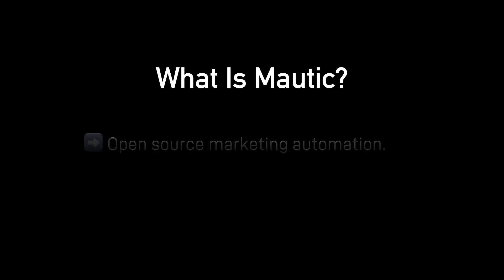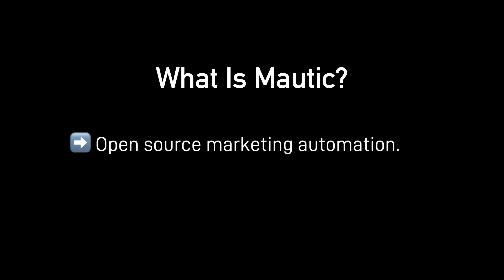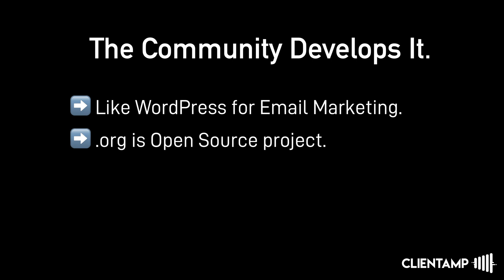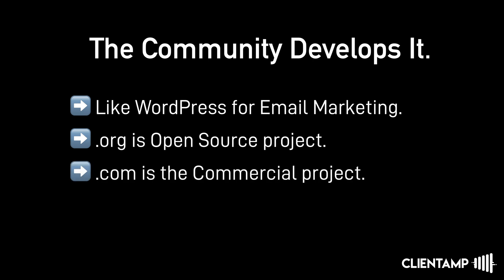So what is Mautic? We said it's open-source marketing automation. Now we've talked about what marketing automation is, but what does it mean to be open-source? It means that the community develops it — it's like WordPress for email marketing. Just like WordPress, there are two components to Mautic. There's a .org domain — that's the open-source project. There's also a .com domain, and that's the commercial project. The difference is that the commercial project hosts Mautic for you and does all of the administrative tasks.